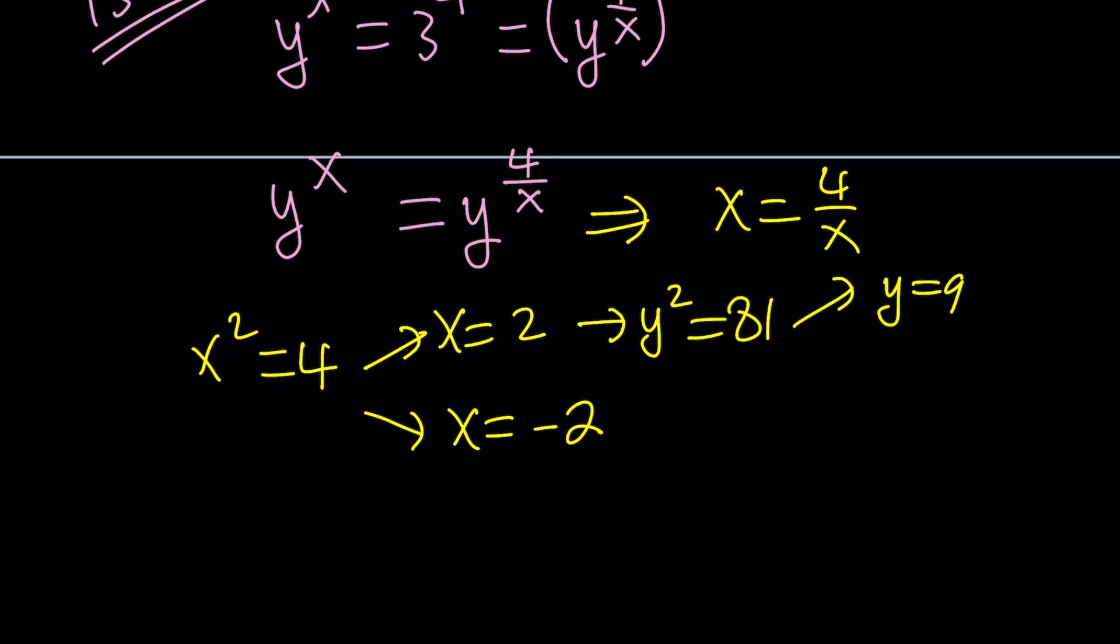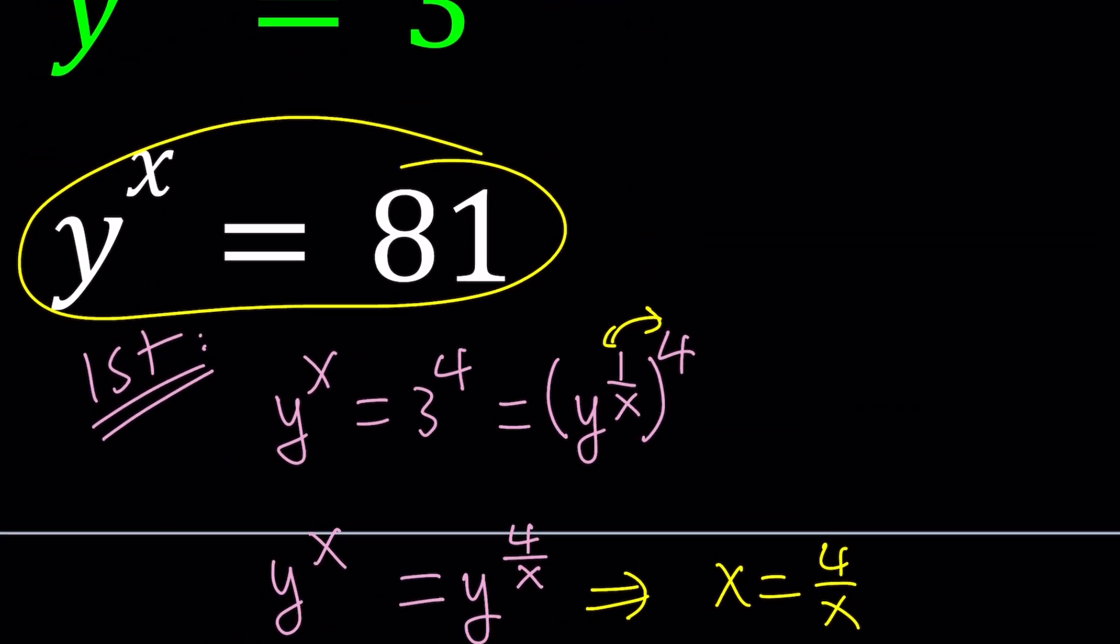And that gives us two solutions for y: y equals 9 and y equals negative 9. And with x equals negative 2, we get y to the power negative 2 equals 81. And this again gives us two solutions.